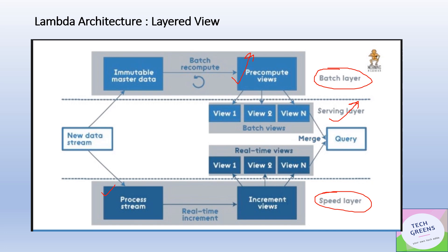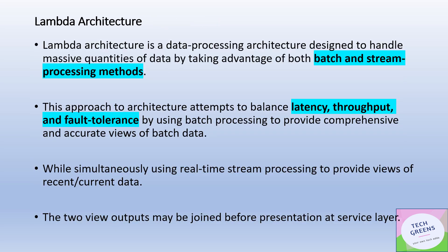Similarly, at the speed layer, the data is processed in real time and incremental views are created, which would be used by the serving layer. The serving layer merges the computed data from the two layers to present the final data to the underlying systems.